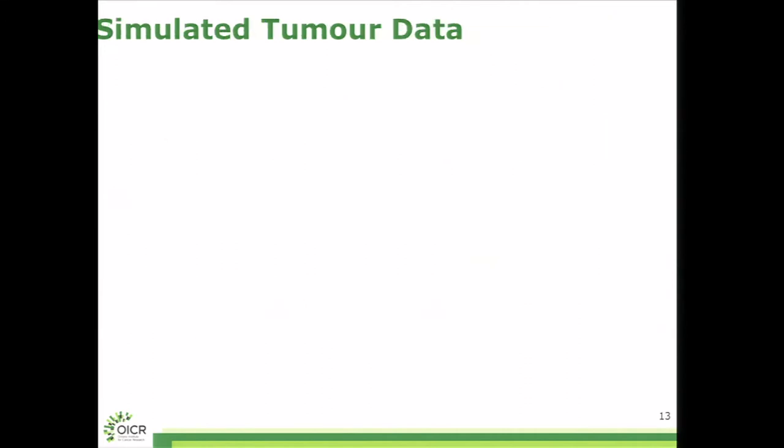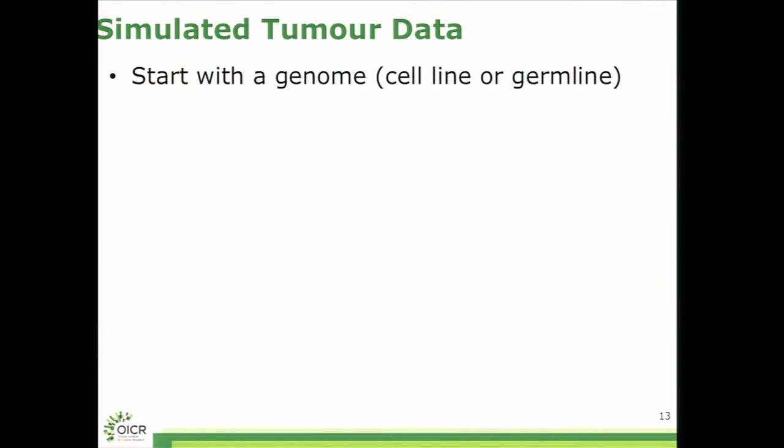As we started to design the challenge, we also realized that there would be a big benefit for having simulated data, a couple of reasons. One is that it might draw people from outside the standard cancer genomics field into this work, somebody who wasn't already developing algorithms. So the way this works is to start with a genome, be it a cell line or a germline tumor genome, to burn in a series of SNVs and structural variations using a tool called BAM Surgeon, developed by Adam Ewing at UCSC, who's another part of the challenge.